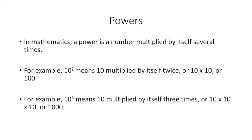A power is just a number multiplied by itself several times. It's written as a base number with a smaller number raised to the upper right — so 10² is read as '10 power 2' and means 10 times 10, which is 100. And 10³ would mean 10 times 10 times 10, which is 1,000.